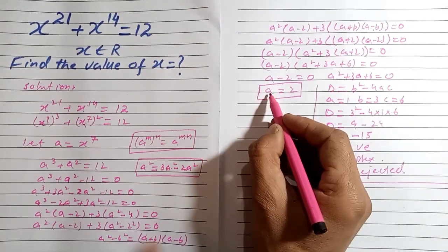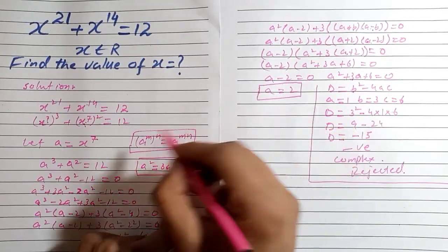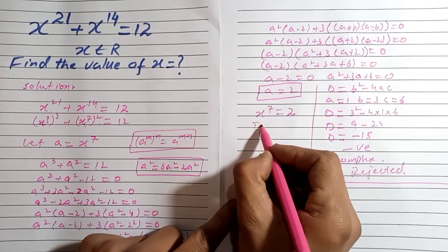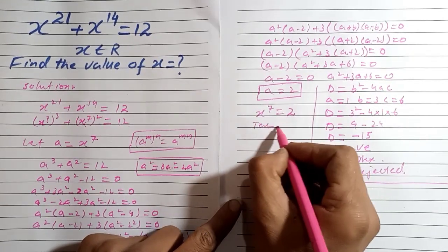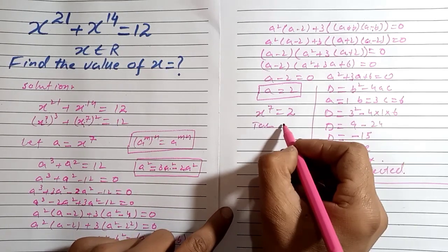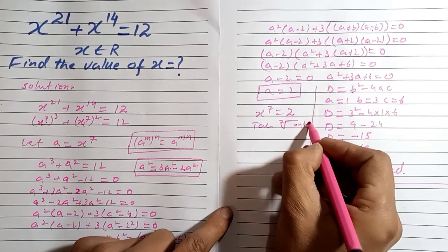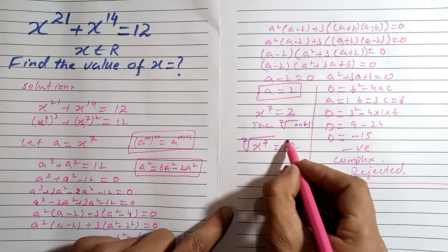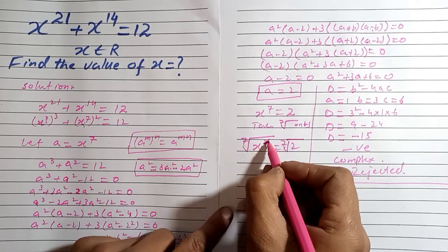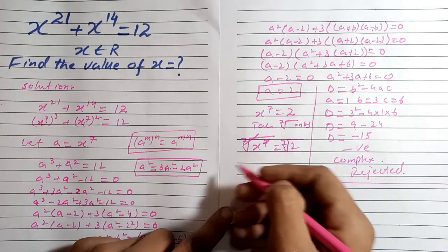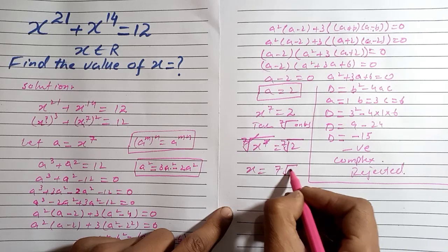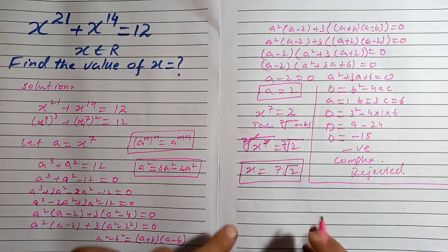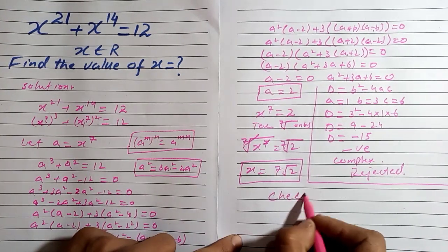Since a = x^7 = 2, we take the 7th root on both sides. So x equals the 7th root of 2, written as 2^(1/7). Our final answer is x = 2^(1/7). Now we check this answer by substituting it back into the original equation.